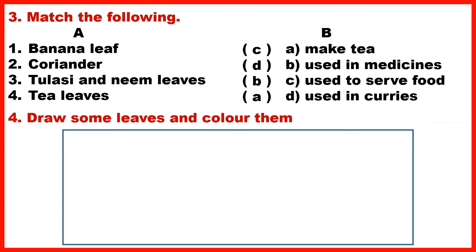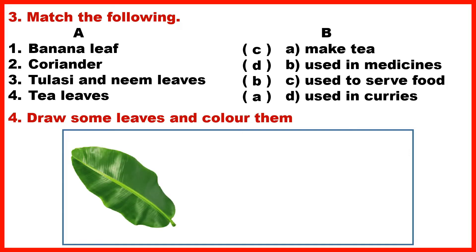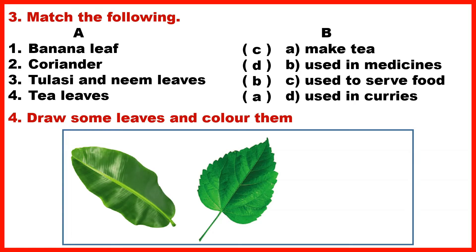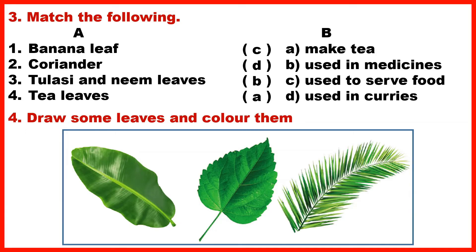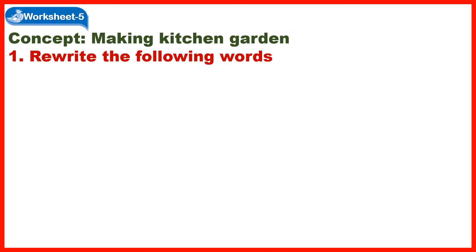Section 4: Draw some leaves and colour them. Worksheet 5 Concept: Making a Kitchen Garden.